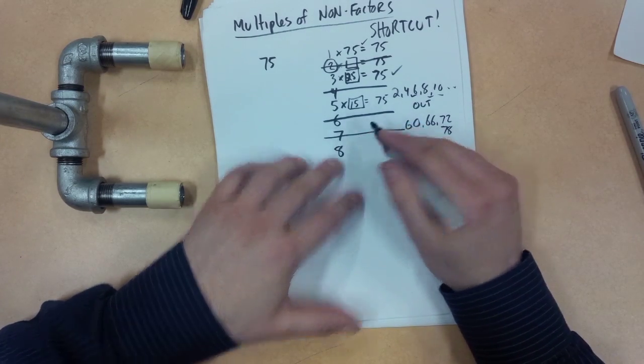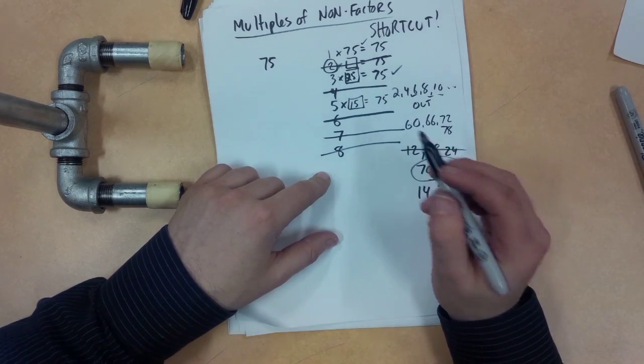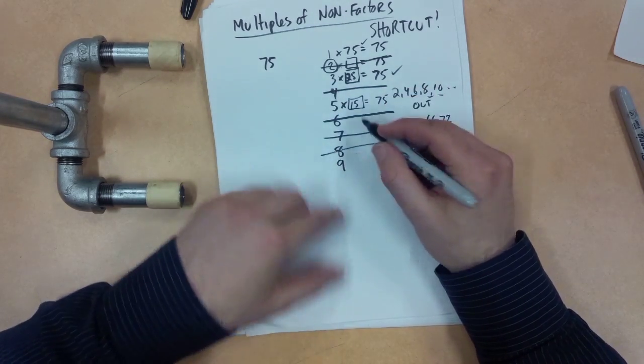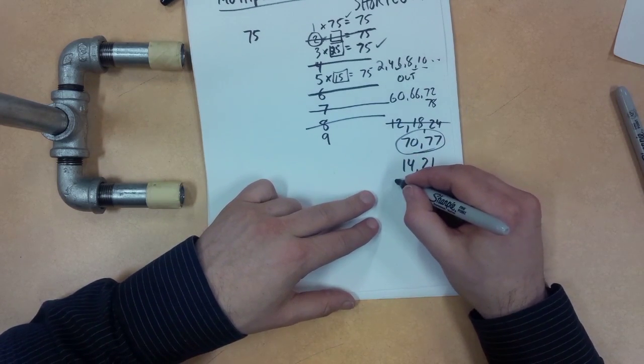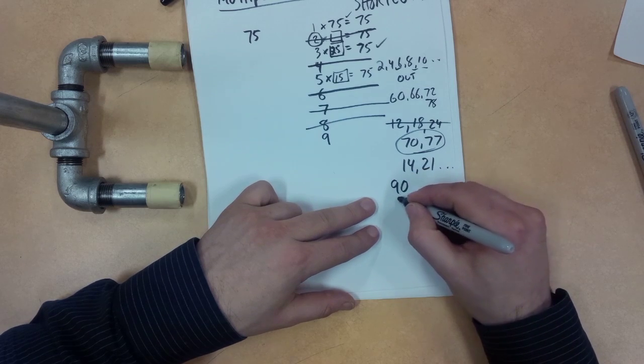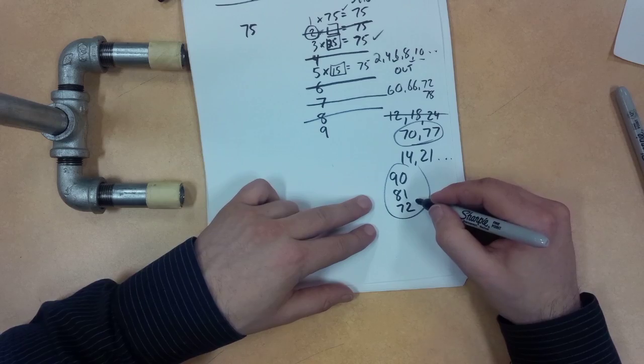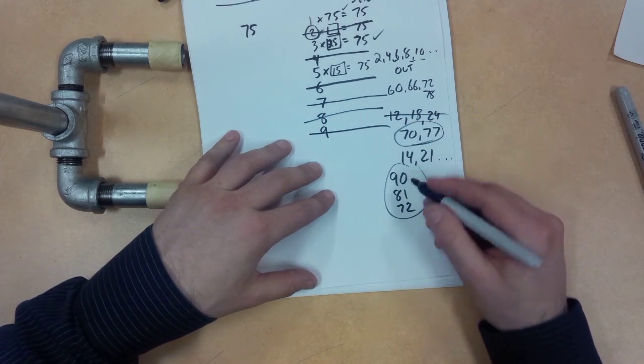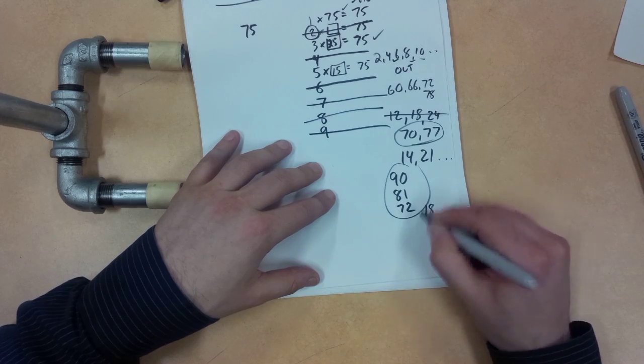What about 8? Well, because I know 4 is out, that tells me that 8 is out. What about 9? Well, 3, let's just try skip counting here. 90. I'll go backwards. 90, 81, 72. So there's no 75 on this list. That means 9 is out. That means I could go up to 18 and 27. Those would all be out as well.